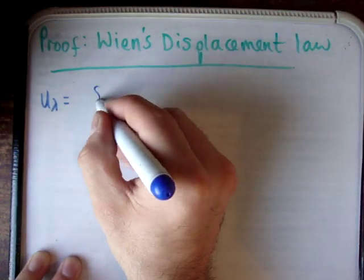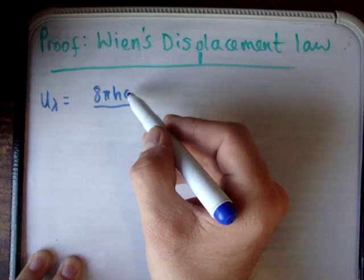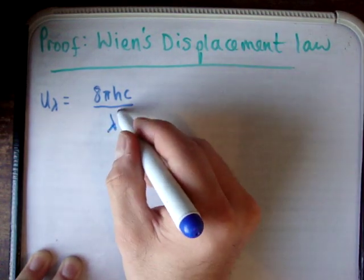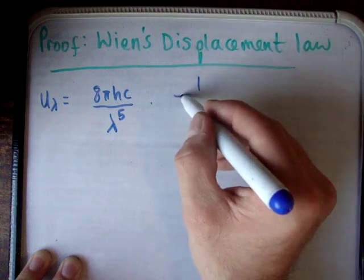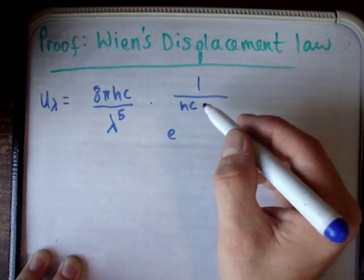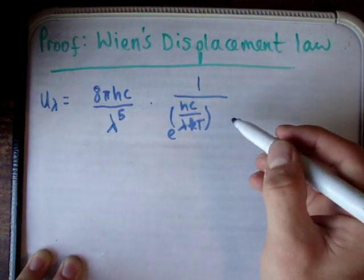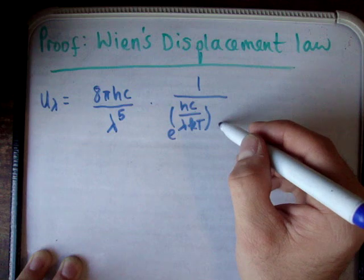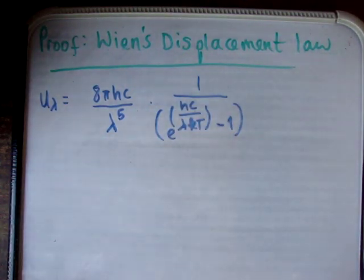And that's defined as 8 pi hc, h being Planck's constant, c being the speed of light, divided by the wavelength to the power of 5, and multiply that times 1 divided by the exponential of hc over lambda kt, k being Boltzmann's constant, and take away from that 1. That is the energy density per unit frequency interval. And it looks like a horrible function.